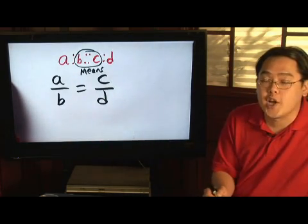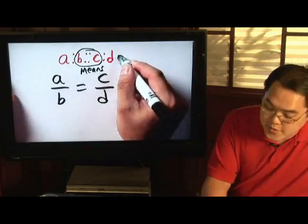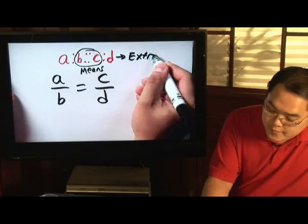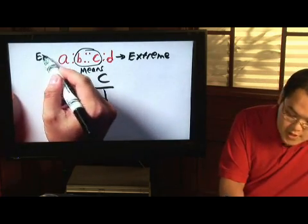A and D being on the outside, they would be called your extremes. So D is considered an extreme here, and A is considered an extreme here.